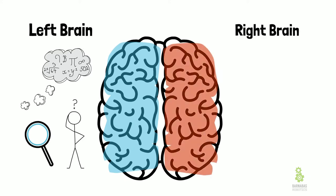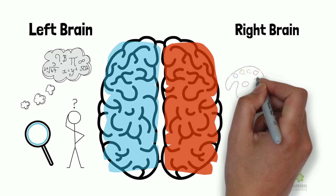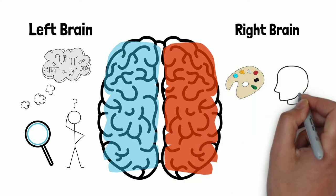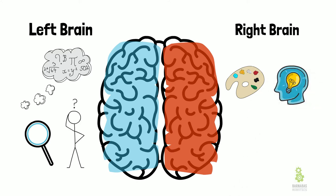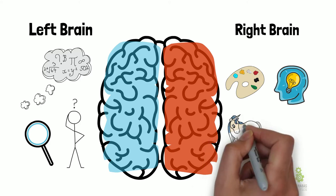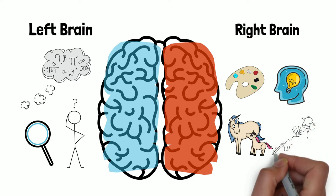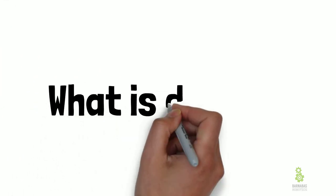Now the right brain — that's a very exciting place. That's the place where we think about art. So when we think of colors, when you ask yourself what's your favorite color, that's your right brain. Another thing is that's where creativity comes from. When you get those light bulb moments, that's your right brain going off. And I love this part: imagination. Imagination is from the right side of our brain. So when we're thinking about unicorns or dragons — do those things actually exist? I don't know, but they exist in my right brain.